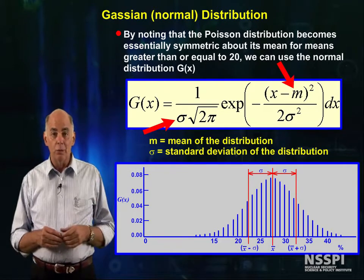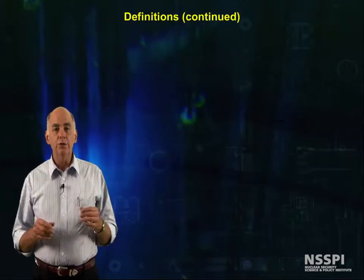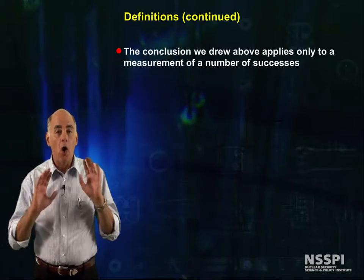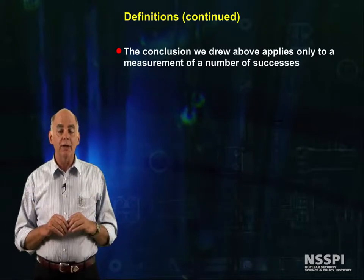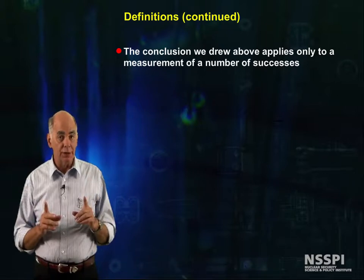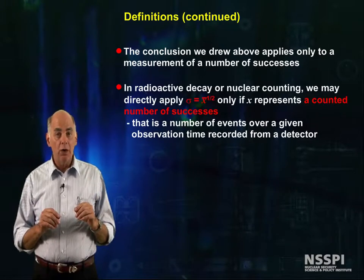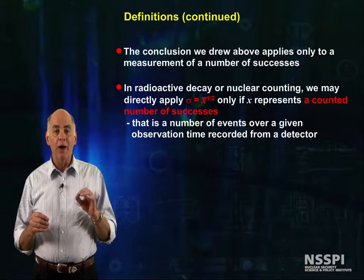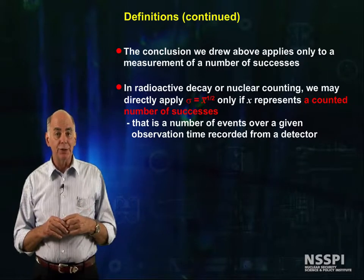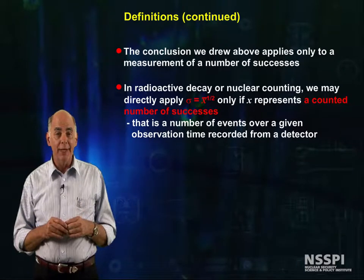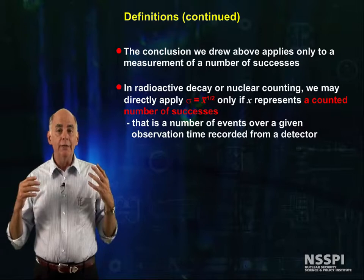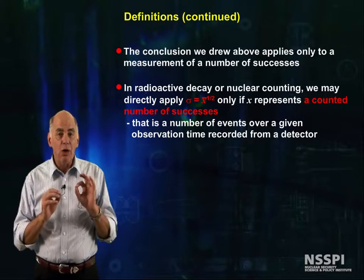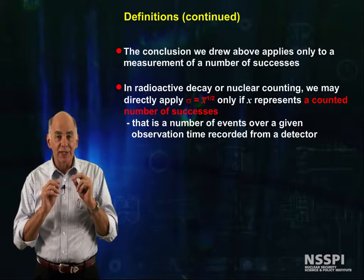As you saw, it works well. The conclusions we drew above apply only to a measurement of the number of successes. In radioactive decay or nuclear counting, we may directly apply that the standard deviation is the square root of the mean, only if x represents a counted number of successes.